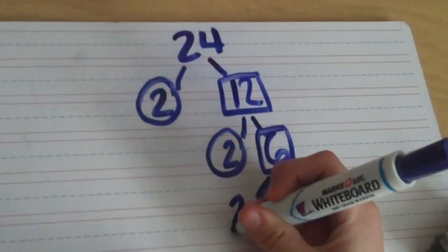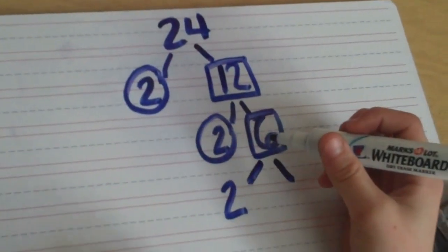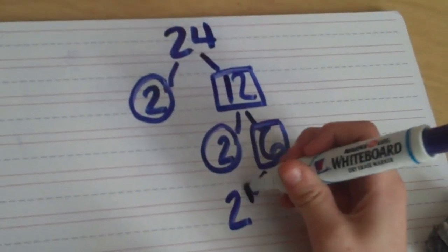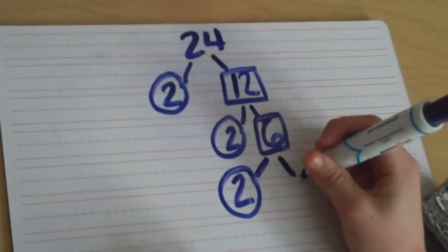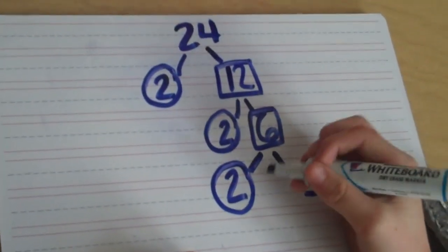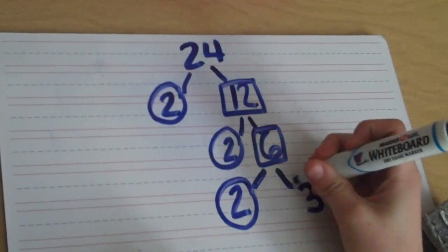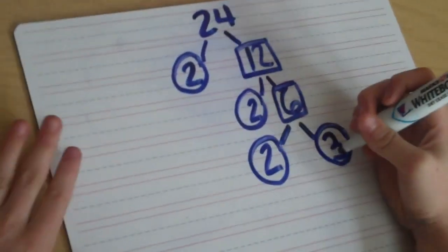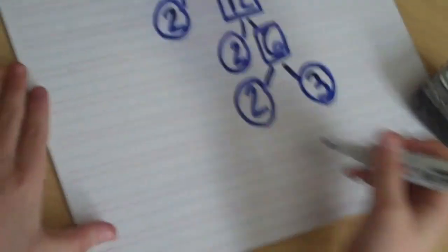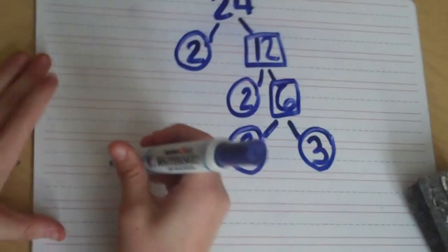I put the number 2 down because 6 is an even number. I put a circle around 2 because it is a prime number. I put the number 3 down because 3 times 2 equals 6. I circled the number 3 because it is a prime number. There are two ways to write this as the answer.